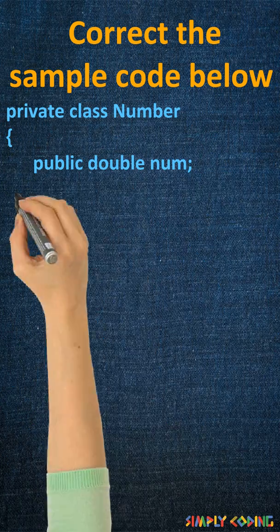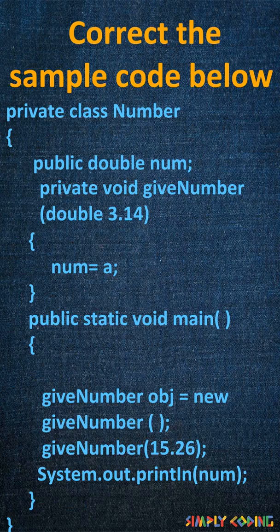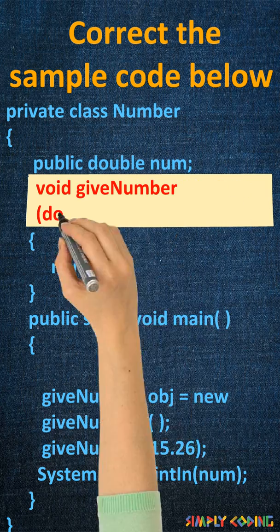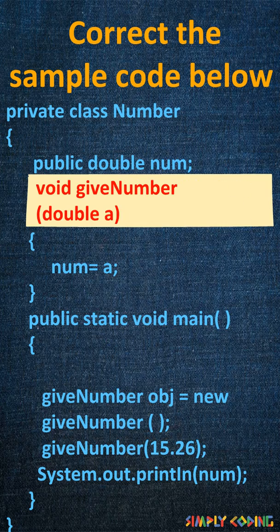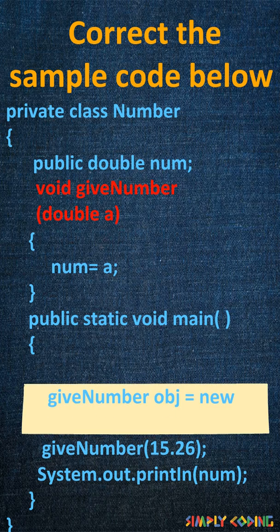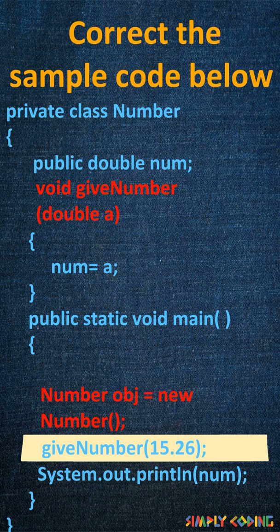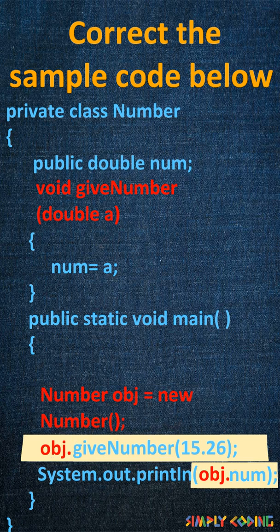Let's take a look at another example. Here if we first look at the method 'giveNumber', it has missing formal parameters which also need to be used for assignment to num. In the main method, the object that needs to be instantiated is 'number'. Then you can use obj to refer to the 'giveNumber' function and the num variable.